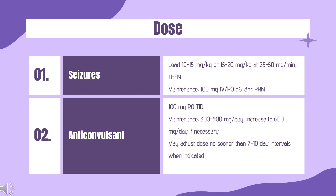Loading dose: 1g divided into 3 doses (400 mg, 300 mg, 300 mg), administered at 2-hour intervals. Initiate maintenance dosage 24 hours after loading dose. Loading dose is not for administration to patients with a history of renal or hepatic disease; reserved for patients who require rapid steady serum levels when oral administration is not desirable, and for patients in a clinic or hospital setting where fenytoin levels can be closely monitored.